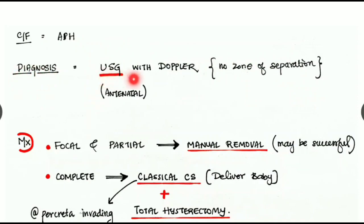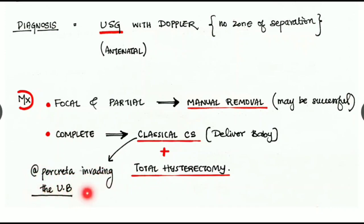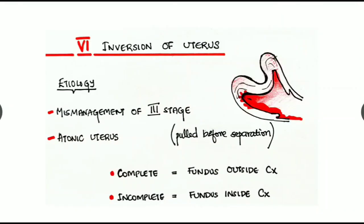The major clinical feature is antepartum hemorrhage. Diagnosis is by ultrasonography with Doppler done antenatally, where there is no zone of separation noted. Management: in focal and partial invasion, manual removal may be successful. In complete invasion, classical cesarean section is done to deliver the baby, followed by total hysterectomy — especially in placenta percreta invading the urinary bladder.